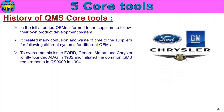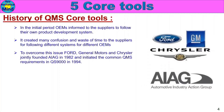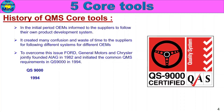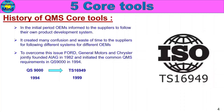To overcome this issue, Ford, General Motors, and Chrysler jointly founded AIAG — Automotive Industry Action Group — in 1982, and initiated the Common Quality Management System Requirements in QS 9000 in 1994. These three major OEMs joined AIAG, one of the automotive associations. All the suppliers used QS 9000 in 1994, which was then changed to TS 16949 in 1999.